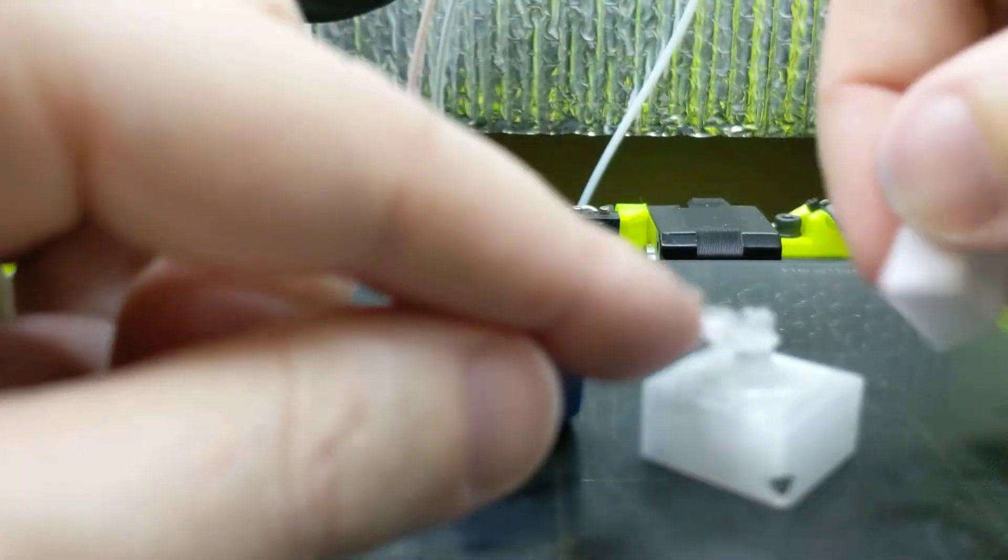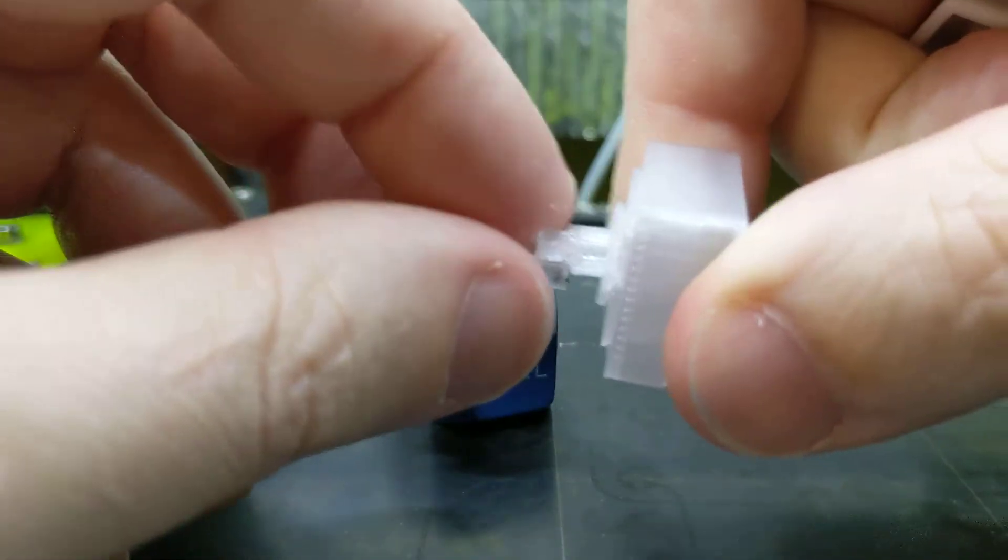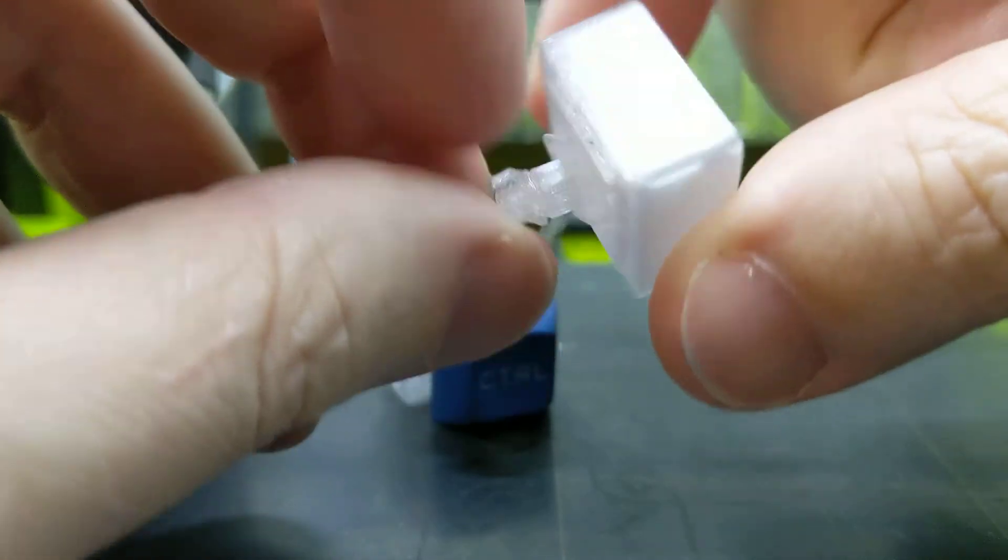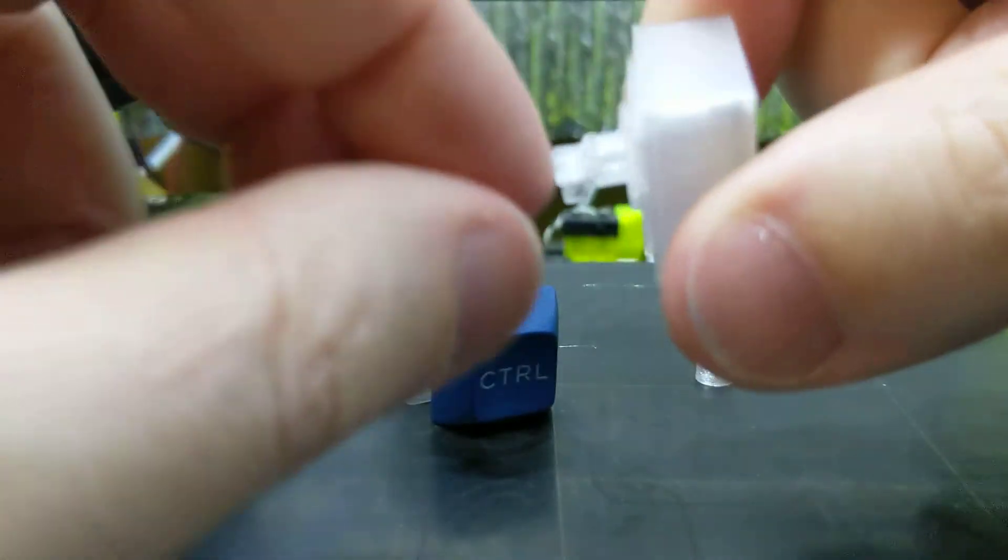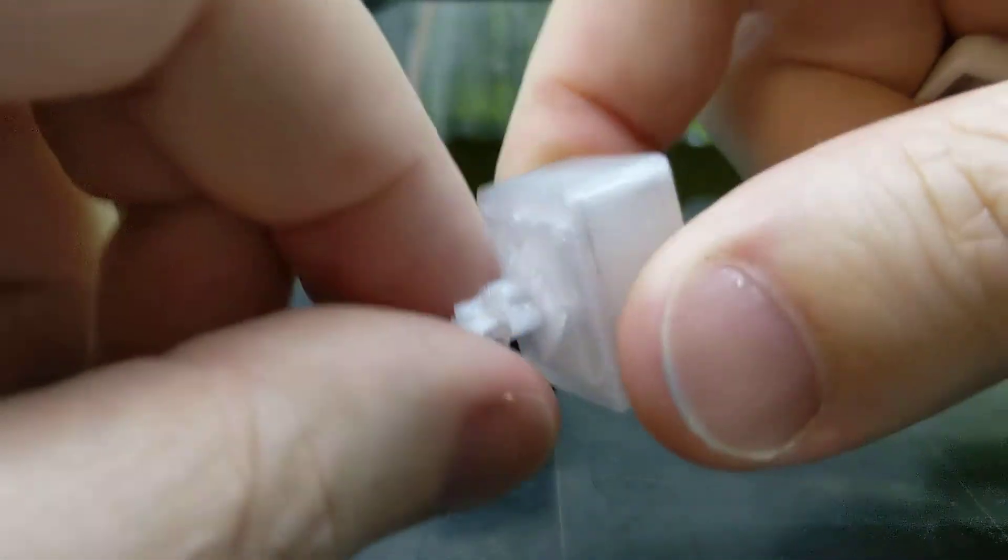Rather than rely on this, this is 0.4 millimeters, so like two layers thick, and it's a little bendy. So I think I might make it a little bit thicker, and what I'll do is I'll just make this part of the stem just that much longer to make up for it. Though it still seems to hold the keycap just fine, it's not really an issue.